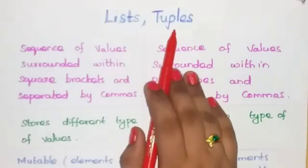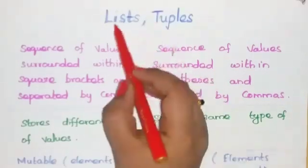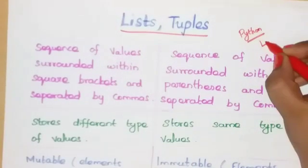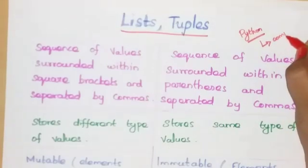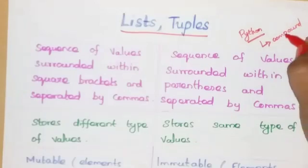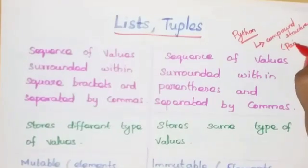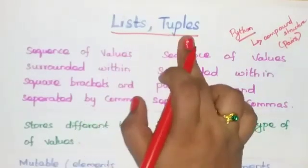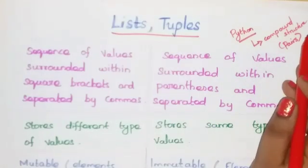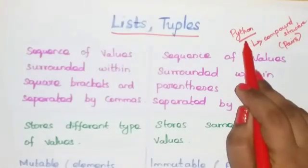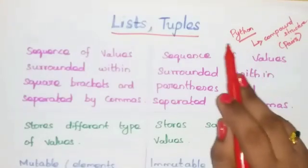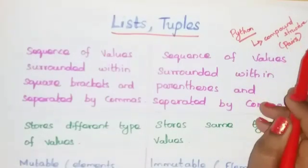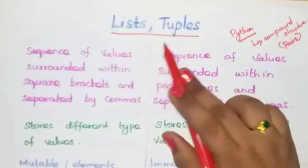Hi students, now coming to the next topic: lists and tuples. Some programming languages like Python provide a compound structure to implement data abstraction. This compound structure is called pairs. A pair is made up of a list or tuples.